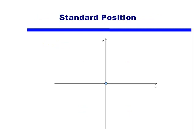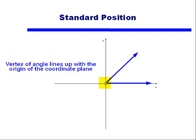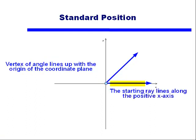Mathematicians prefer to put things in standard forms so we all know what we're talking about. In order to put an angle in standard position, we do two things. First, we line up the vertex of the angle — that's where the two rays meet — with the origin of the coordinate plane. Second, that first ray lines up along the positive x-axis. Once we've lined up the vertex and that starting ray, we have our angle in standard position.